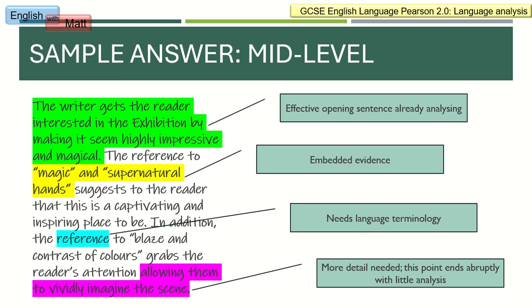A mid-level answer would obviously be a bit longer because the student is saying more. It begins with a nice point, and in the green section the student is already analysing — using comments like 'the writer is making the exhibition seem highly impressive and magical,' which is an effect. The evidence is much more concise and it's also embedded. However, to strive for a higher mark, the student could develop use of terminology — nouns, adjectives, verbs, phrases — and at the end needs to give a little more detail rather than finishing abruptly with 'allowing them to vividly imagine the scene' without specifying what about the scene.